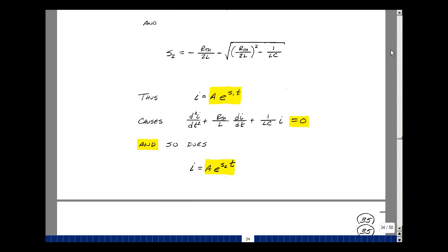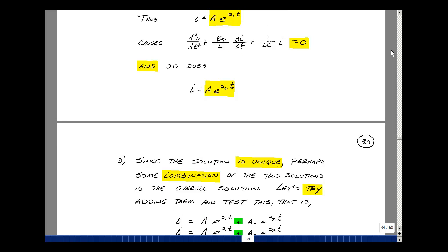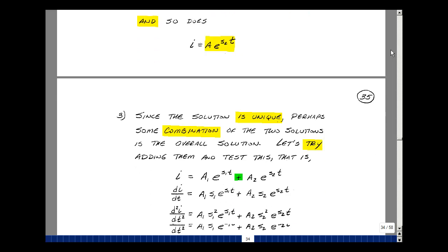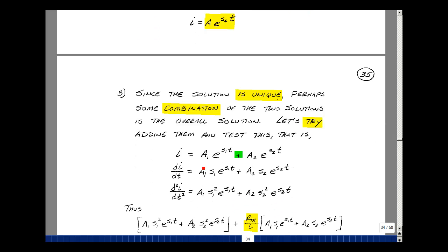Let's take another guess, if we can. Maybe it's some combination of these two. Probably the simplest thing to do is to add them together. Let's use two different constants here, A1 and A2, because we really have two initial conditions to satisfy. Let's plug this into our differential equation.